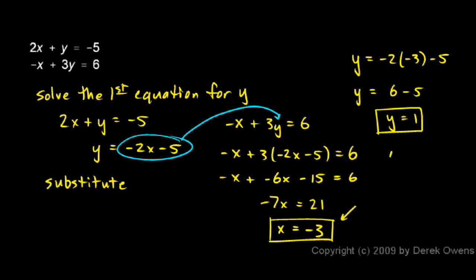And you can write your answers like that, indicating the two answers, or you could write it as an ordered pair: x is -3, y is 1. That would be acceptable too.